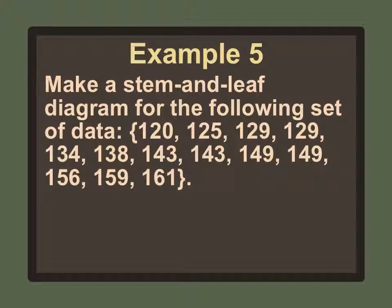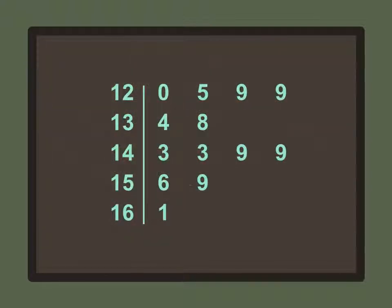Let's do another example. For this data set, the numbers are in the hundreds, so if we used just the first digit, all would be 1 — they'd all be on the same stem, which is confusing. So we make the stem the first two digits: 12, 13, 14, 15, and 16. For example, stem 12 with leaf 0 is 120, leaf 5 is 125, leaf 9 is 129. Then 134, 138, 143, 143, 149, 149, 156, 159, and 161.